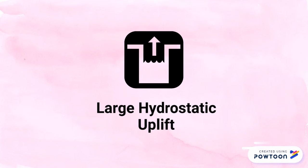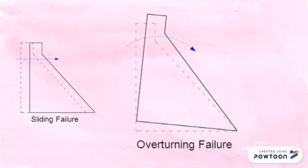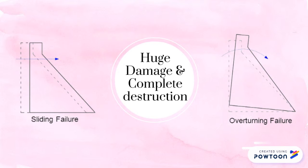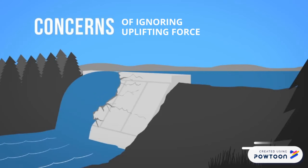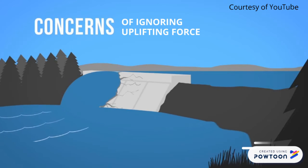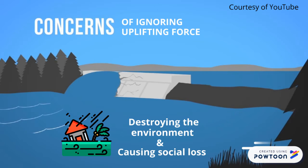Due to this large hydrostatic uplift, the rising water will cause a hydrostatic force which can make the dam slide horizontally and overturn above its downstream edge or toe, leading to huge damage to the dam structure or sometimes even complete destruction. This might lead to flooding in the surrounding areas, especially during heavy rainfall, destroying the habitats of many people and causing major social loss to society.